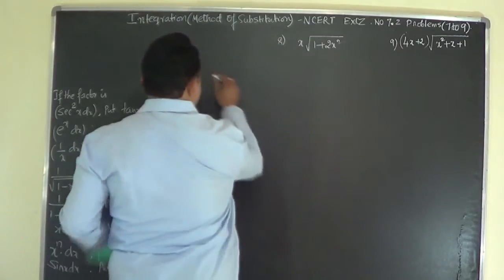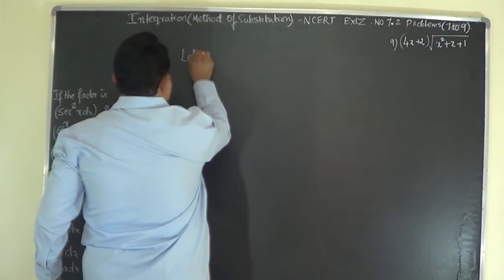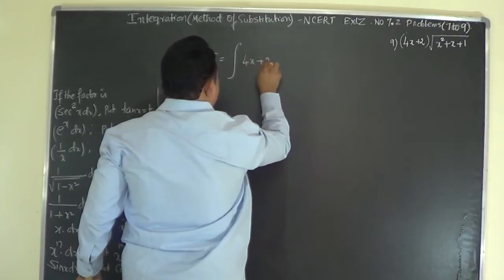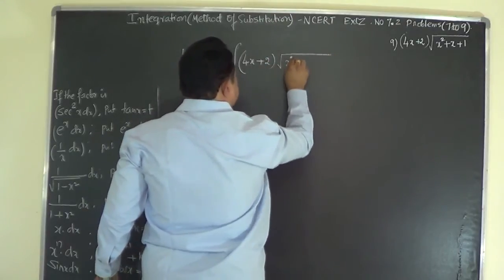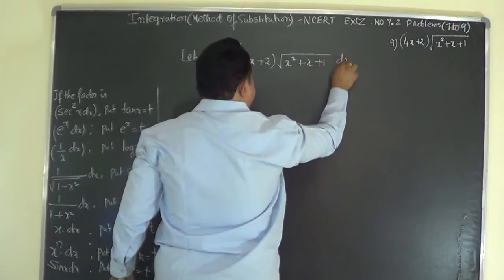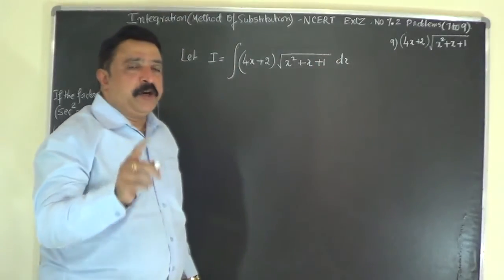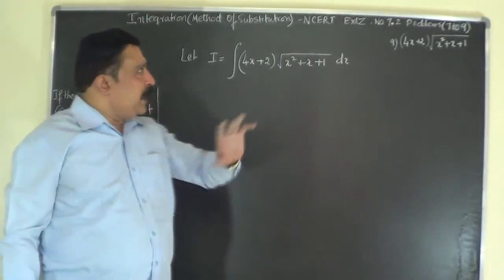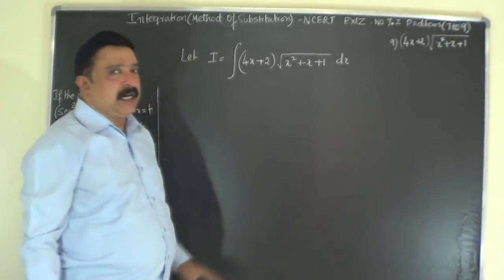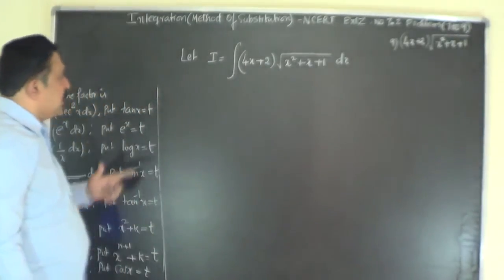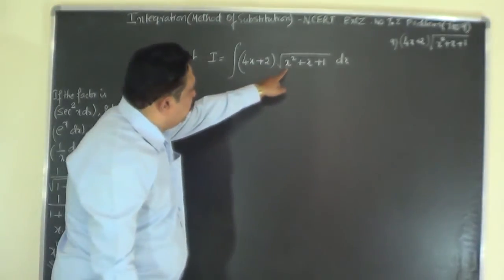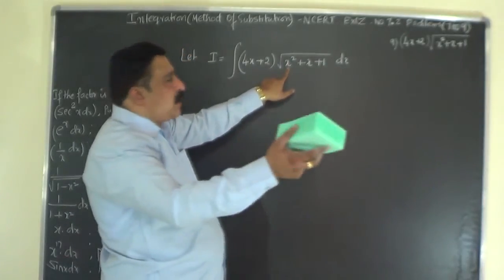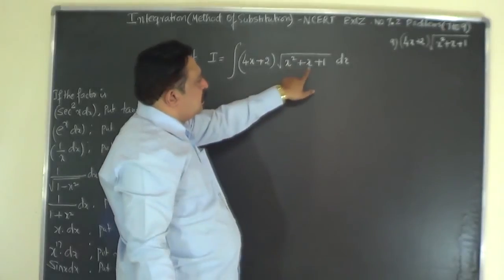Problem number 9: let I equal the integral of (4x+2) times the square root of (x²+x+1) dx. For any substitution problem, first check whether substituting some part of the integrand as t gives a replacement factor. Here, if we differentiate x²+x+1, we get 2x+1, and we can take a common factor.